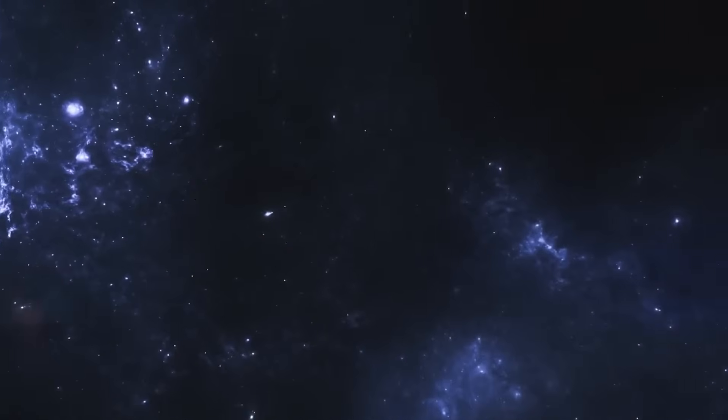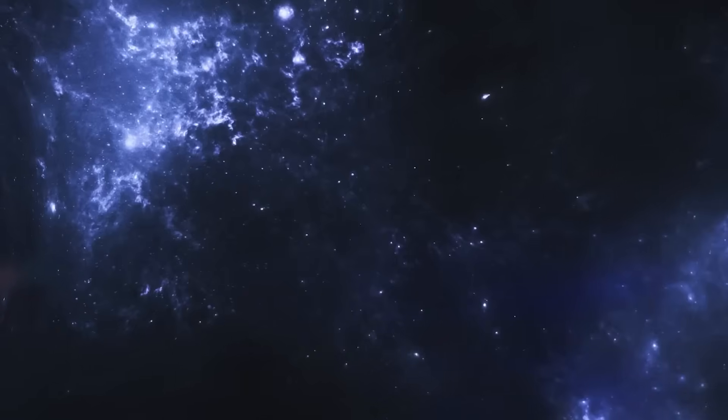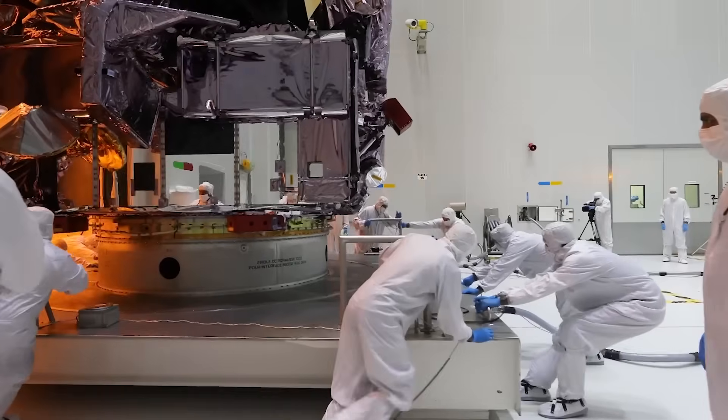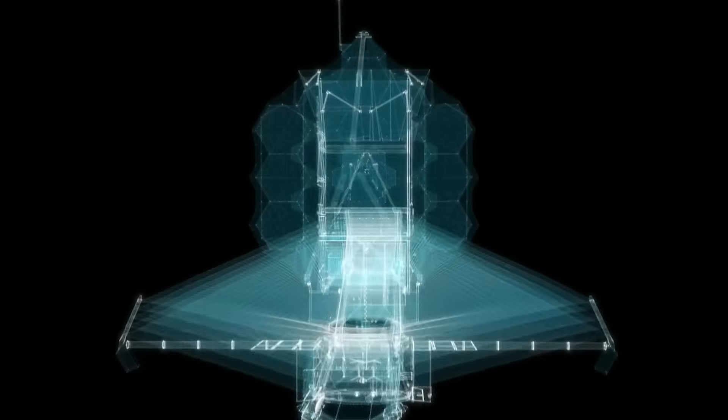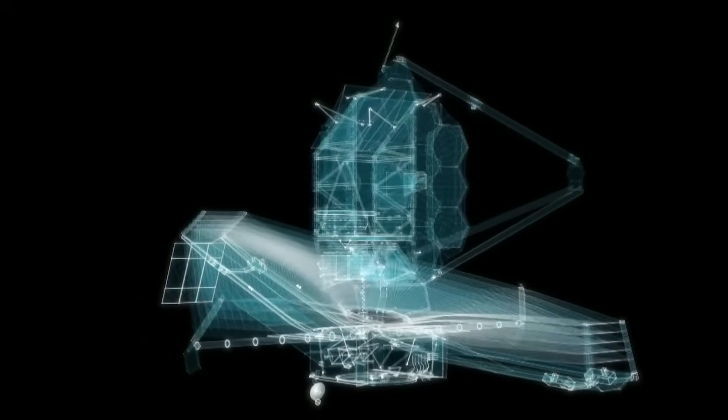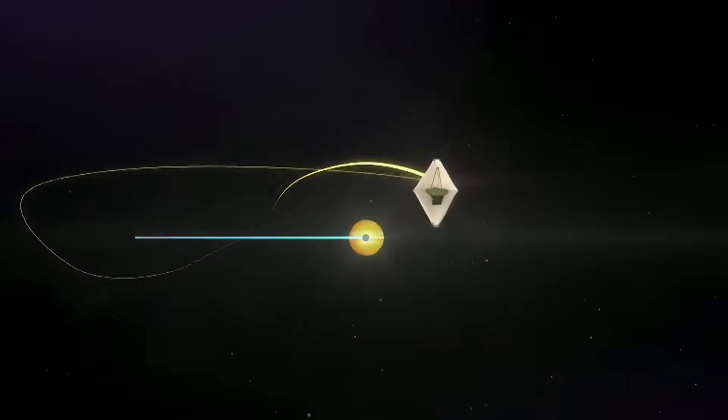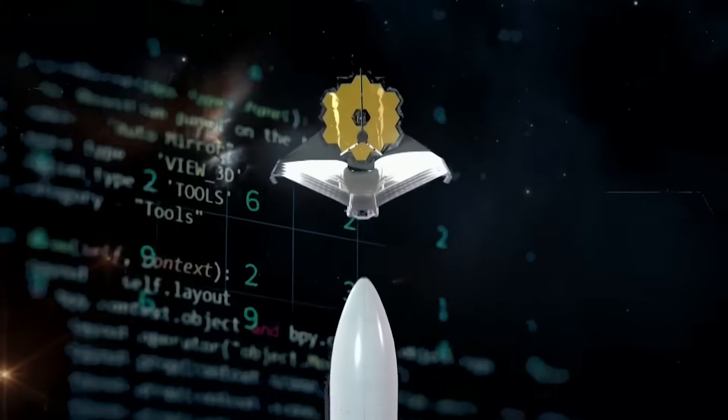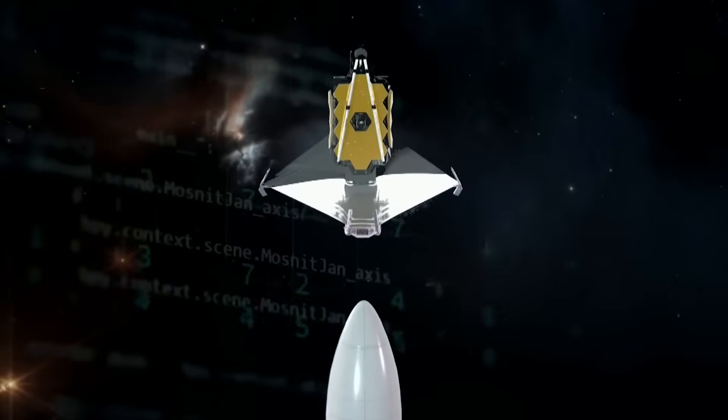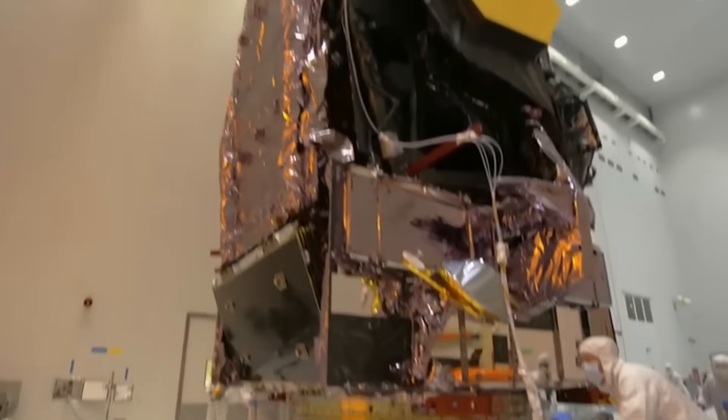One unsettling possibility became impossible to ignore. The observed structure in space may not be natural or communicative, it could be a construct. A megastructure so vast that it stretched across parsecs, hidden in the dark matter regions of space where it avoided detection, until Webb's infrared vision uncovered its subtle energy fluctuations. The very idea of something like a Dyson sphere, long relegated to theory, now resurfaced with terrifying plausibility.